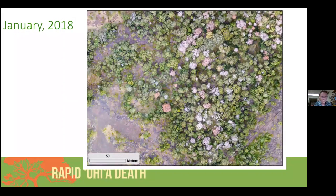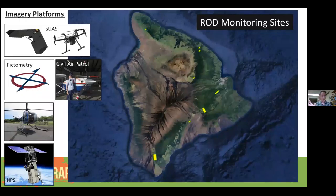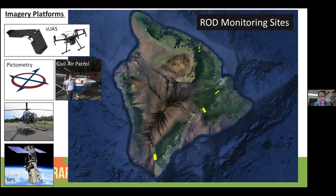We can not only see this with our eyes, but also quantify it using vegetation indices. This is an example of applying a remote sensing vegetation index to parse out these different stages. It's somewhat artificial to say 'stage one, stage two' — the truth is the tree goes through a continuum of change once it's expressing symptoms. But we've decided for grouping purposes to break it up into these different stages.